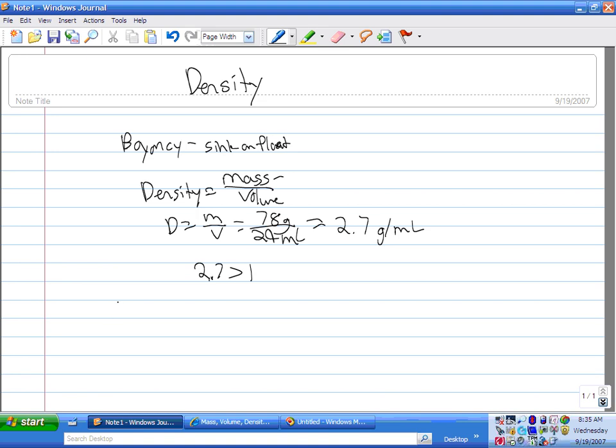So, the triangle for density is density is equal to mass divided by volume. Yet, volume is equal to mass divided by density. And mass is equal to density times volume. Which fits perfectly.